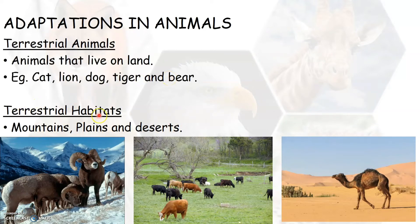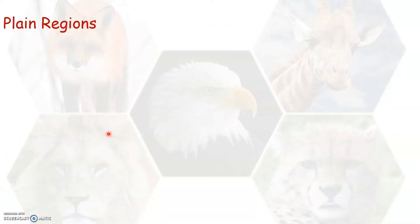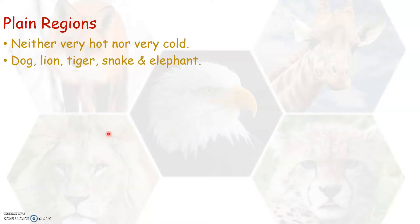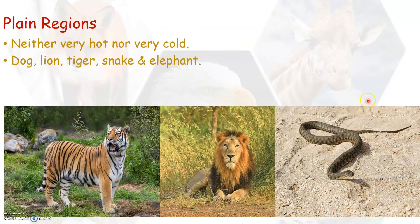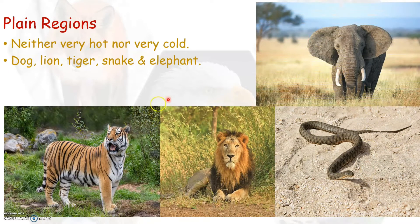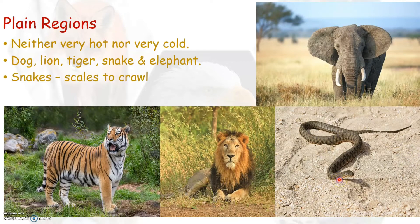Let us learn about the first terrestrial habitat — the plain region. Plain regions are not very hot or very cold. Some of the animals that live in the plain regions are dogs, lions, tigers, snakes, and elephants. Animals like dogs, lions, tigers, and elephants use their legs to walk and run around. Snakes do not have legs, but they use their scales to crawl. One common thing for all these terrestrial animals is that they use their lungs to breathe.